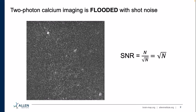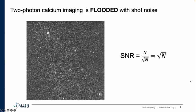This speckle is due to a very low light regime — you're essentially looking at the quantization of light. In that regime, the signal-to-noise ratio is proportional to the square root of the number of photons. Before we dive in, I want to share an intuition about where this is coming from.